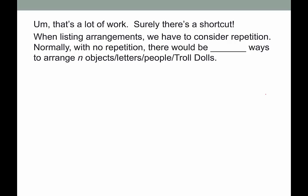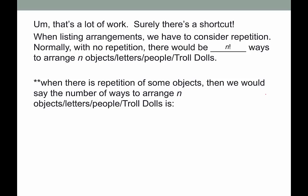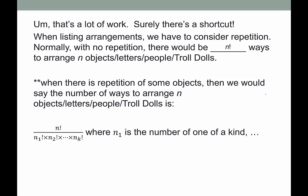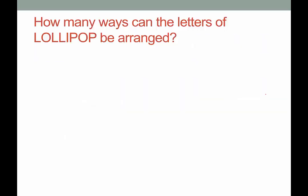In listing arrangements, we have to consider repetition. Normally with no repetition, there would be n factorial ways to arrange n objects — letters, people, troll dolls, whatever. When there is repetition of some of the objects, the number of ways to arrange n objects is n factorial over n-sub-1 factorial times n-sub-2 factorial, where n-sub-1 is the number of one kind — like the number of P's — n-sub-2 is the number of O's, n-sub-3 is the number of Y's, and so on.